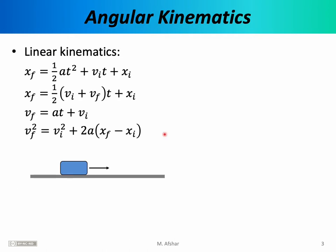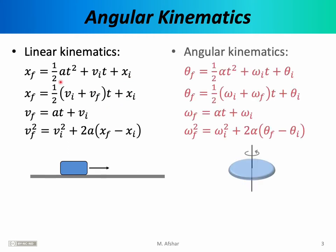We learned back in chapter 2 that when discussing the linear motion of an object, like a box sliding across the floor, we can use the kinematic equations to relate the motion variables x, v, and a. It turns out when discussing the rotational or angular motion of an object, like a spinning disk, we can use a similar set of equations to relate the angular motion variables. This set of equations on the right hand side is known as the angular kinematic equations. I will not derive them — the derivation is exactly the same as for the linear kinematic equations from chapter 2.